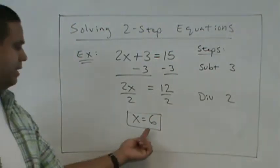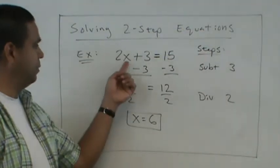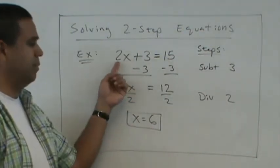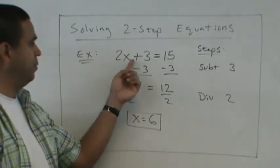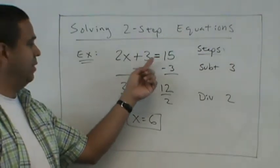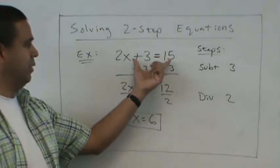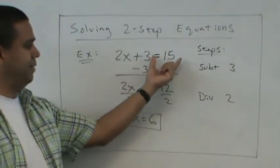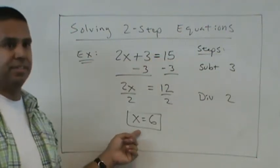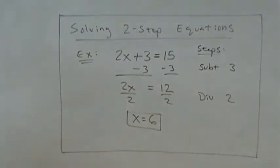And a good idea would be to just check this real quick. Take the 6, put it here. 6 times 2? 12. 12 plus 3? 15. And it makes the sentence, the equation true. 15 equals 15. So we know that 6 is the answer, the solution. Questions on that one?